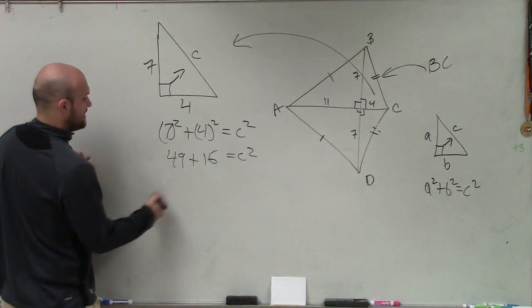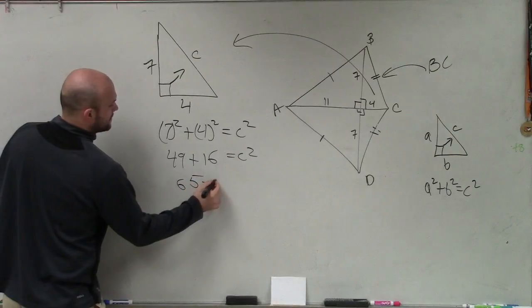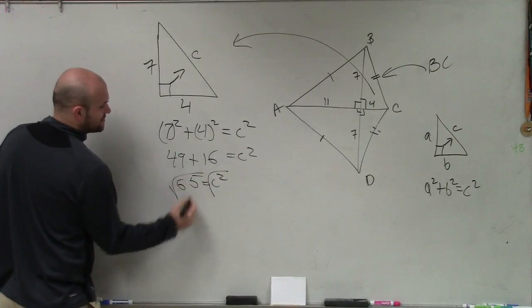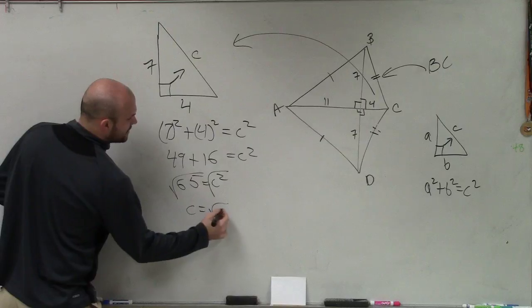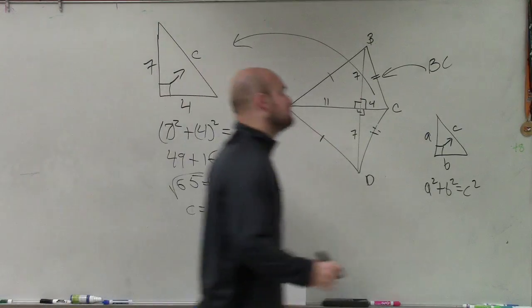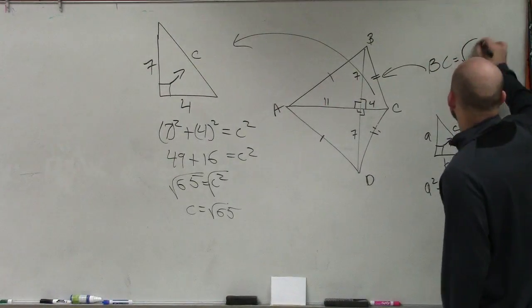And since we haven't talked about simplifying radicals yet, I'll just leave this as the square root of 65. Therefore, BC is equal to the square root of 65.